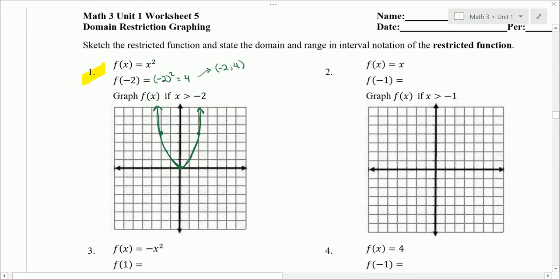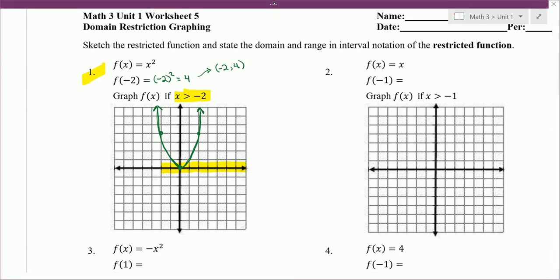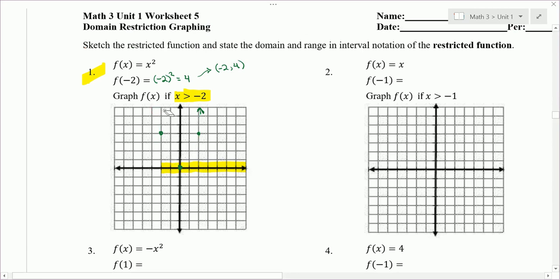So now it wants to restrict our domain. And the domain in interval notation here is saying x is going to be greater than negative 2. So here's negative 2, I'm just highlighting the part of the domain that we want. So anything above that yellow highlight we want to keep. Anything that's not above it we want to get rid of. So you get your eraser out and say okay, I want just this part.